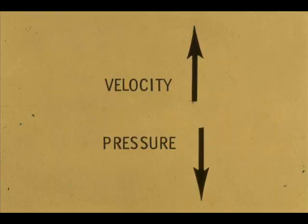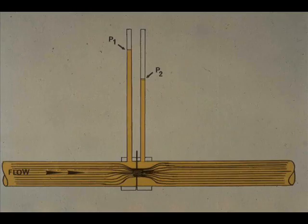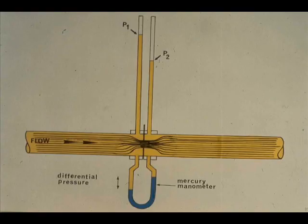As the velocity goes up, pressure goes down. This same principle applies when an orifice plate is used. P1, just ahead of the orifice, is the highest pressure, and P2, just beyond the orifice, is the lowest pressure. To measure the pressure drop across the orifice, we could install a mercury manometer — a U-shaped tube filled with mercury — connected to points P1 and P2. The higher pressure at P1 forces the mercury upward toward P2. The difference in levels is the delta P across the orifice for a particular flow rate.